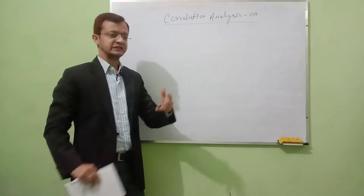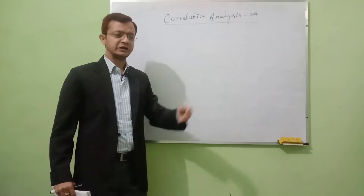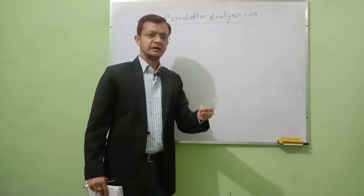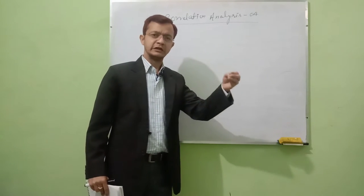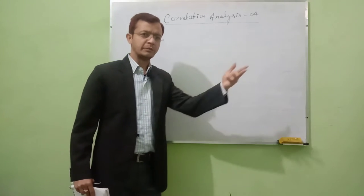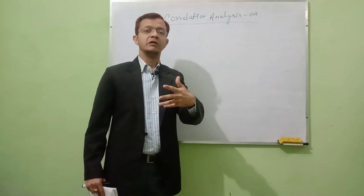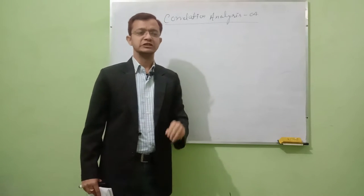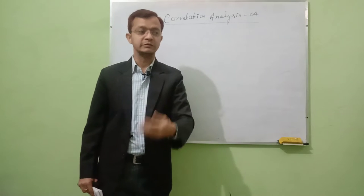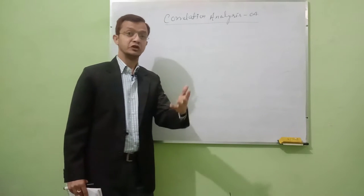We discussed types of correlation: there is positive and negative correlation, linear and curvilinear correlation, simple, multiple, and partial correlation. And if we talk about the degree of correlation, it means the intensity of the relationship existing between two variables or more than two variables. That is the degree of correlation.